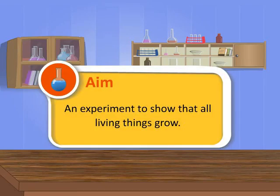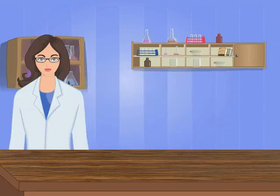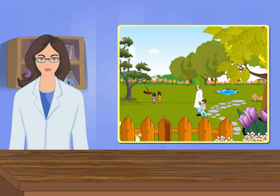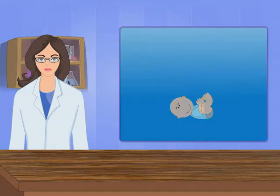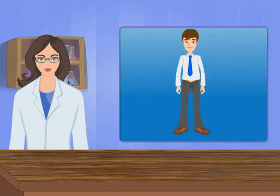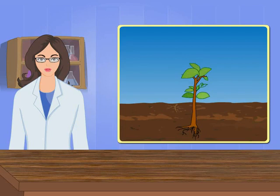Welcome to the science lab, children! Today you will perform an experiment based on one of the most common and important characteristics of living things: all living things grow. A baby grows into an adult, and a seedling grows into a plant or a tree. Through this experiment, we will be able to see that a living thing grows.